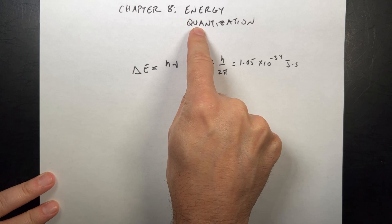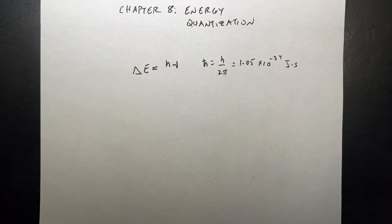This is the idea that at very small systems, and it works for large systems too, a system can only have certain energy values. It can't be in between.